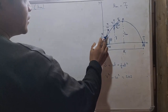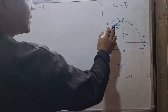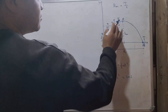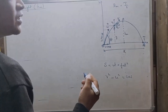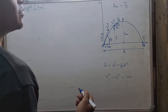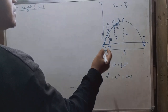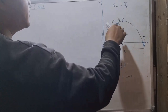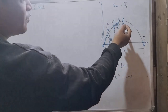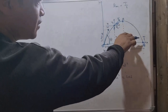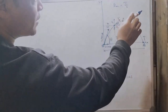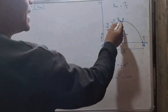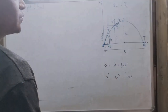As it goes up, the velocity starts decreasing. At this point, the velocity is V. Once the height is maximum, the vertical velocity at that point is zero. Why is the vertical velocity zero? Because this is the maximum height — beyond this, the projectile cannot go up anymore, so it has to fall down. Therefore, the vertical velocity at maximum height is zero.